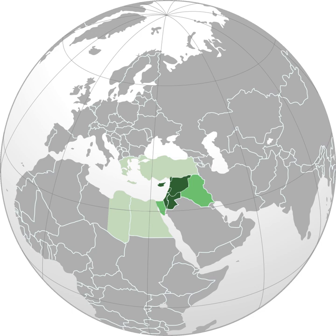Most populations in the Levant speak Levantine Arabic, usually classified as the varieties North Levantine Arabic in Lebanon, Syria, and parts of Turkey, and South Levantine Arabic in Palestine and Jordan. Each of these encompasses a spectrum of regional or urban and rural variations. In addition to the varieties normally grouped together as Levantine, a number of other varieties and dialects of Arabic are spoken in the Levant area, such as Levantine Bedawi Arabic and Mesopotamian Arabic.